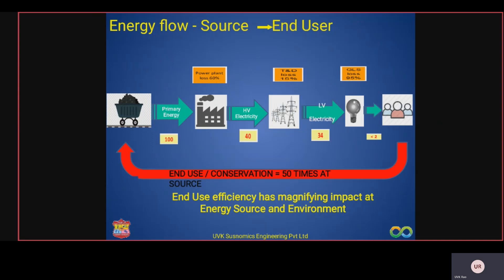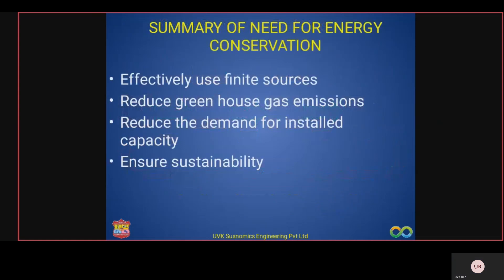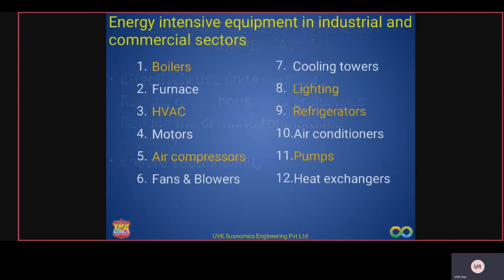The key summary: if you conserve 1 unit at the end-use point, you actually conserve 50 units at the source. The need for energy conservation therefore includes: effectively using finite non-renewable sources like coal, oil, and natural gas; reducing greenhouse gas emissions; reducing demand for installed capacity; and ensuring sustainability — saving energy today so it is available for the next generation.